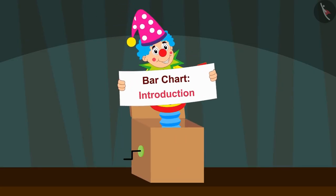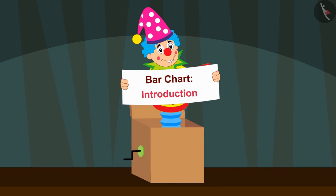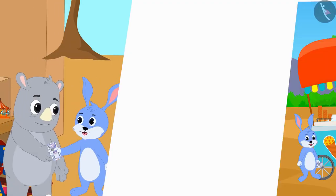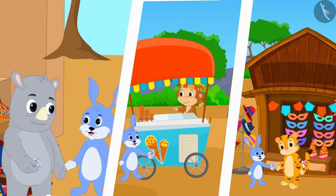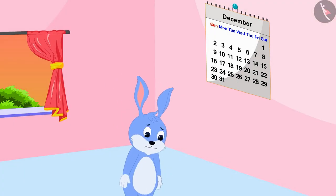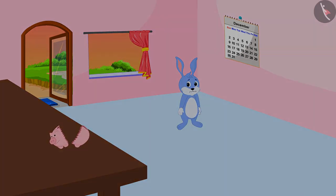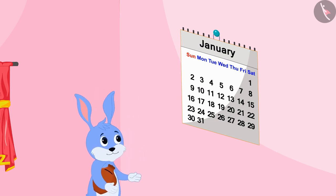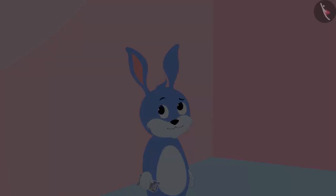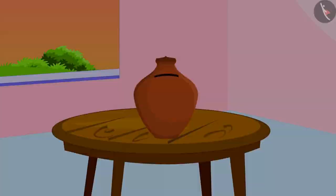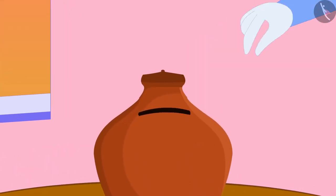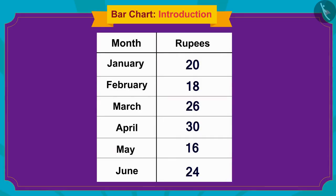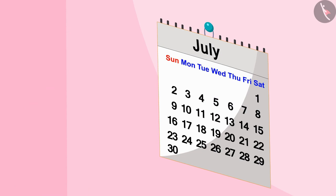Hello children. In this video we will learn about bar charts. Bunny started spending a lot of money every month, due to which by the end of the month all his money would be over. He decided to start the new year by saving money every month. So bunny started saving money — he would put the money saved each month in a piggy bank and write the amount saved in a table in his notebook.